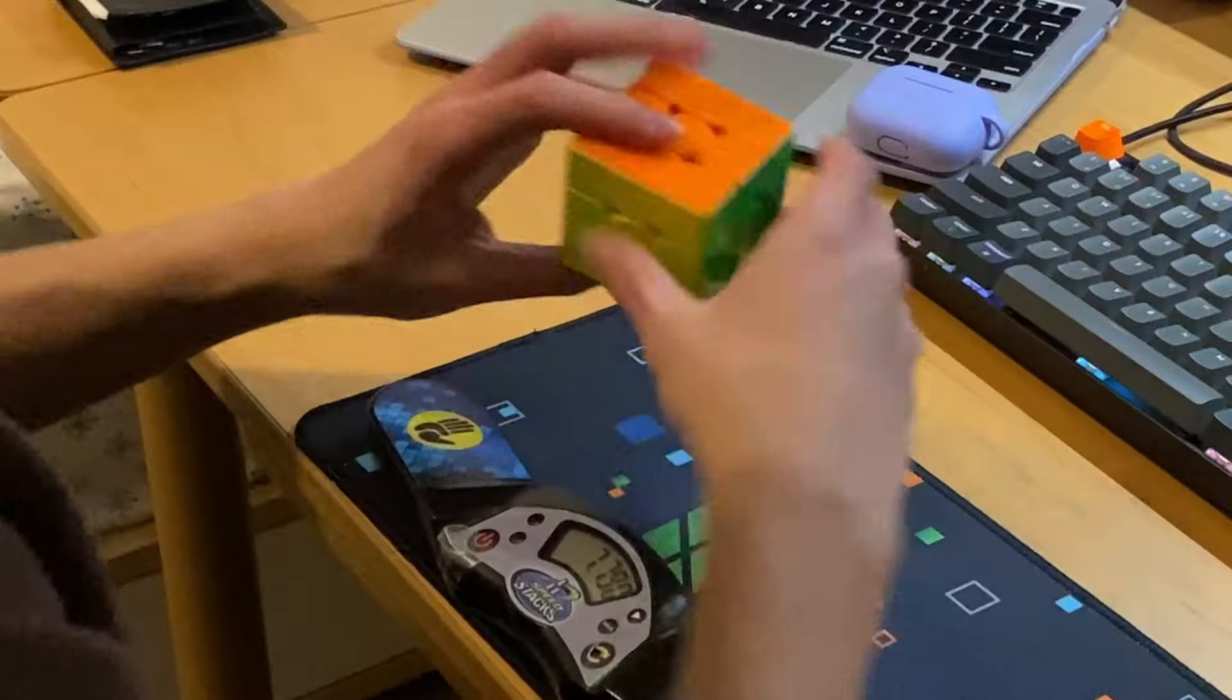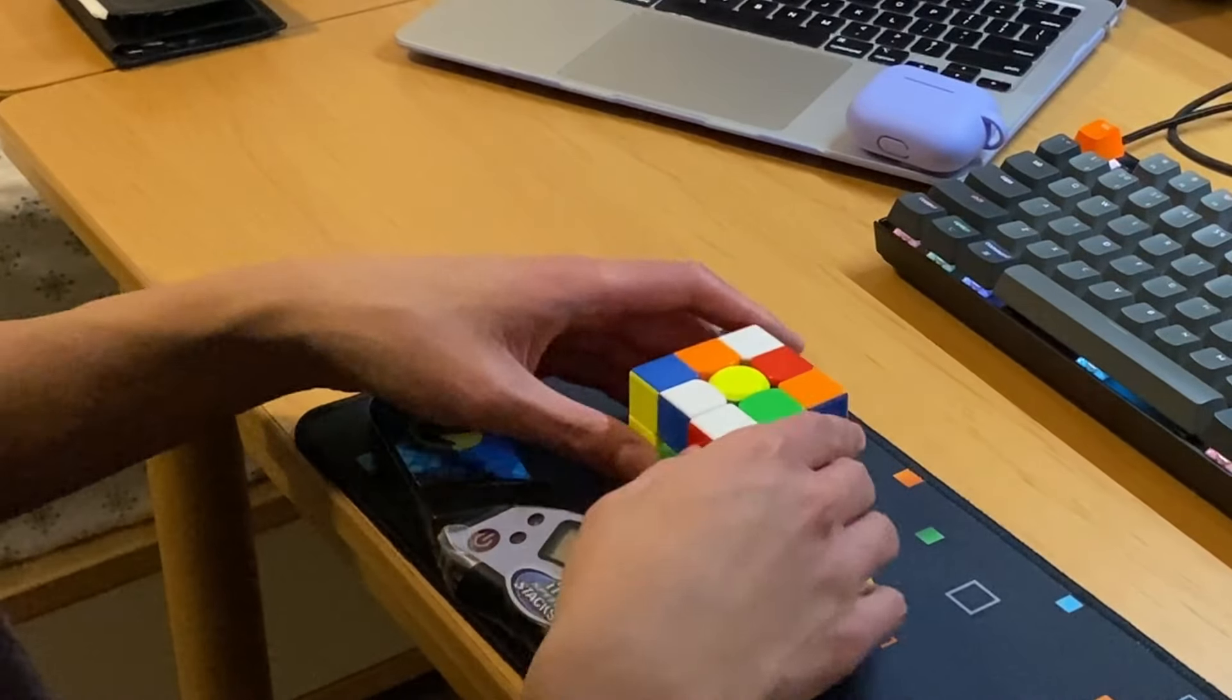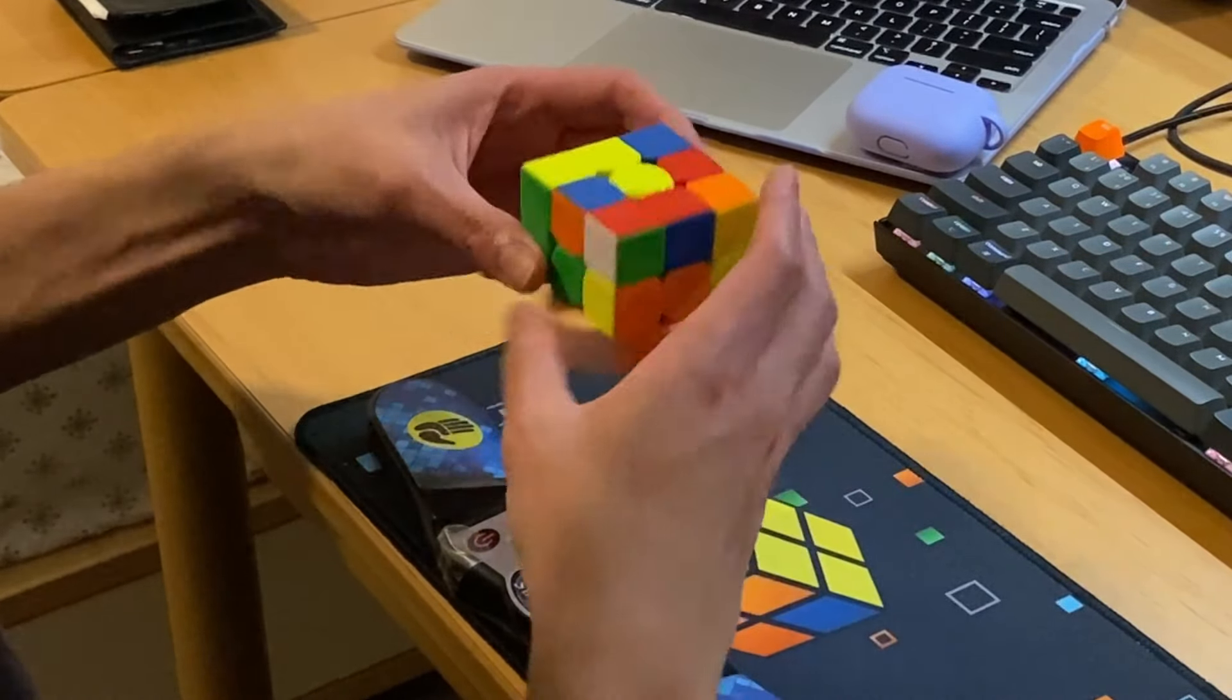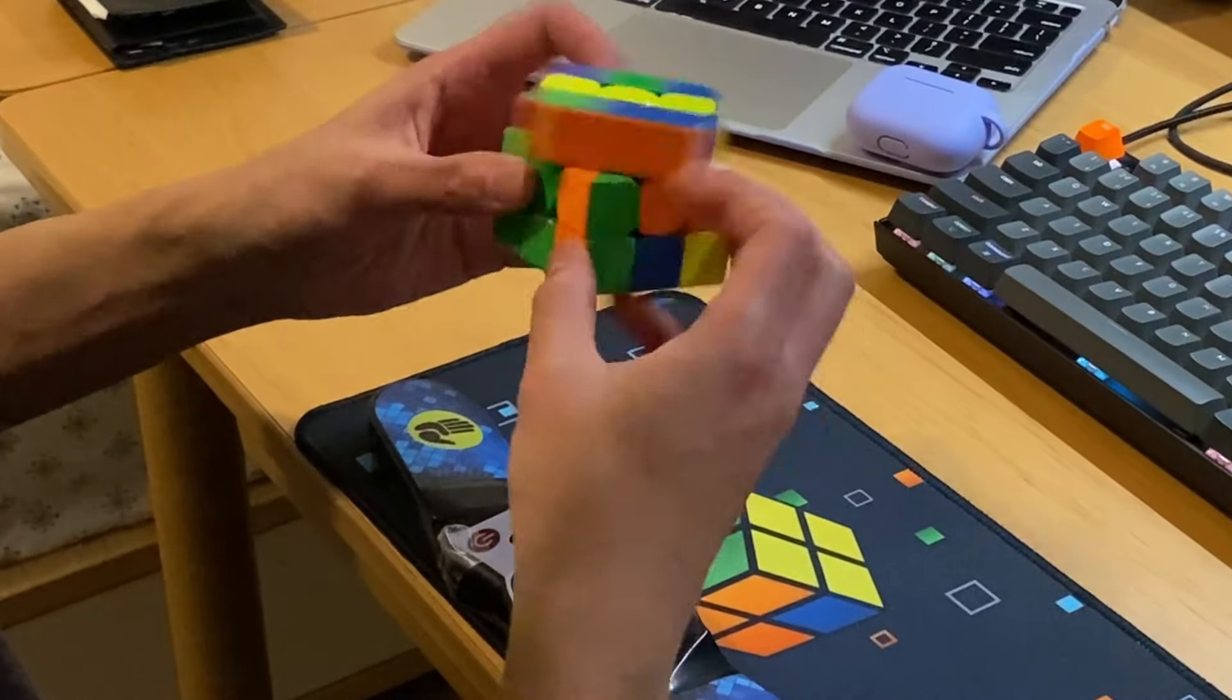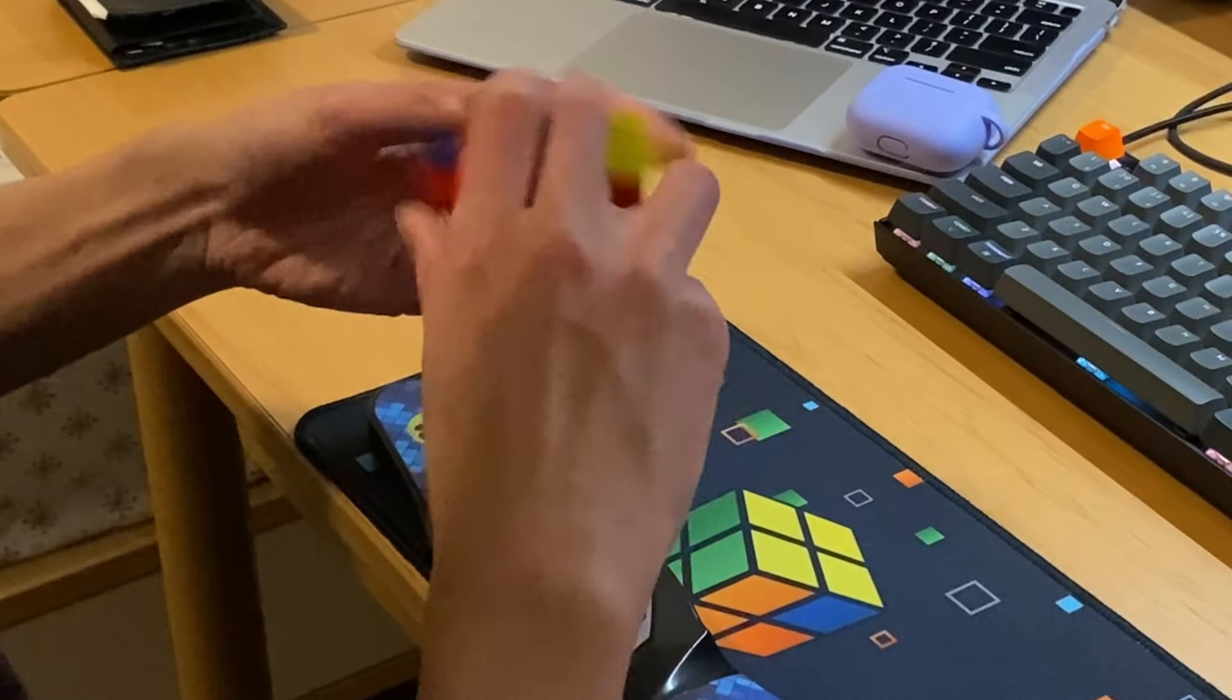I've used it in comp for a few rounds and have gotten some pretty good results with it, including a 7.71 PR average. I think the V5 works much better in comp compared to other cubes like the V9 or the Super Weilong.